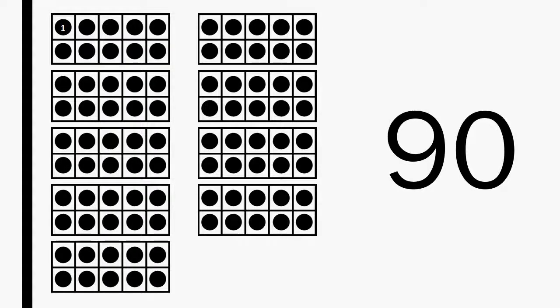Let's see how many ways we can make the number 90. 1, 2, 3, 4, 5, 6, 7, 8, 9, 10.